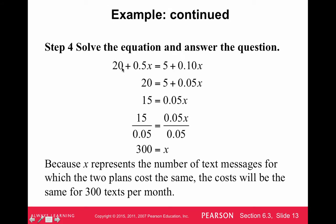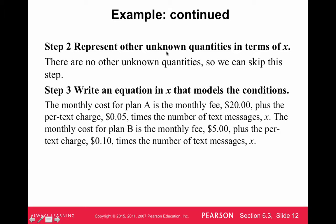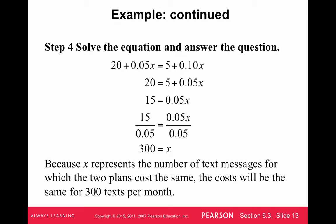So we have $20 plus 0.05x equal to $5 plus 0.10x. The first step is to move the x terms to the same side by subtracting 0.05x. So 0.10 minus 0.05 is 0.05, giving us 0.05x on the right. Then subtract 5 from both sides: 20 minus 5 is 15. Dividing both sides by 0.05 gives x equals 300. The cost will be the same for 300 text messages per month.